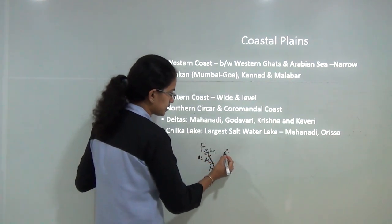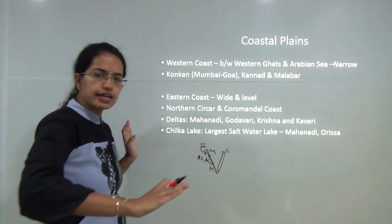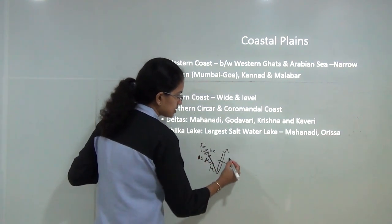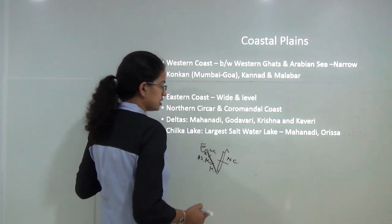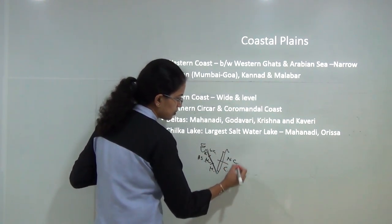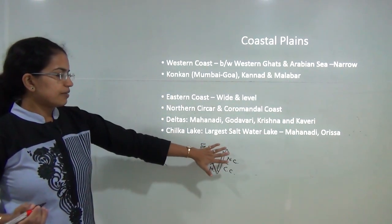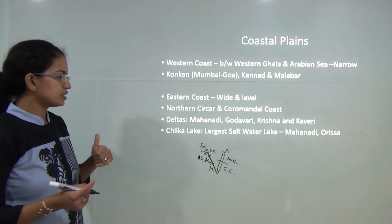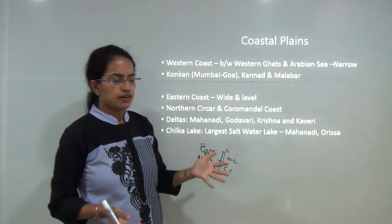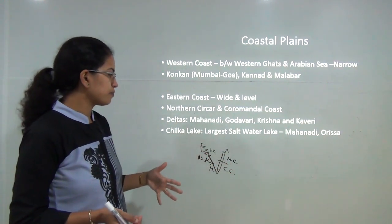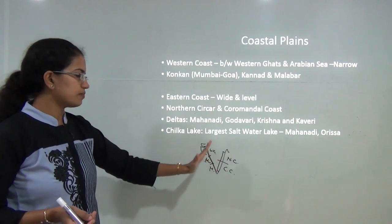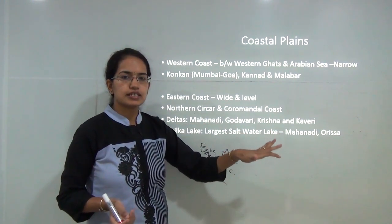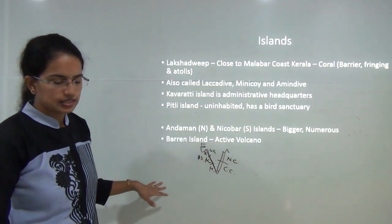The eastern coastal plains are much wider and more level. They are divided into the northern Sirkars in the north and the Coromandel coast in the south. Rivers such as Mahanadi, Godavari, Krishna, and Kaveri drain here and form deltas. The eastern coastal plain is also known for Chilka Lake, one of the largest saltwater lakes, formed on the Mahanadi river in Odisha.